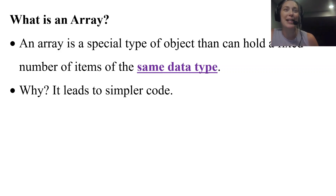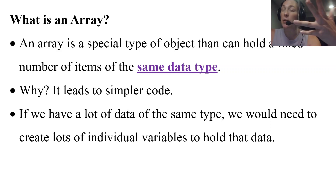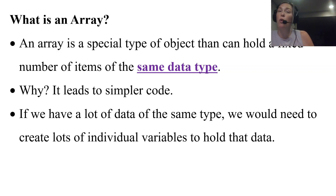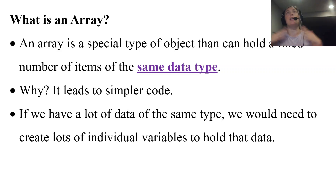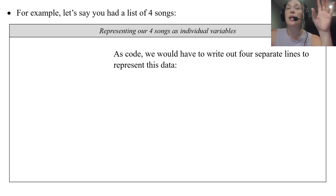Why do we want this data structure called an array? It's going to lead to simpler code when we have a lot of data of the same type. So far in Java we've had to create variables, and if we have a lot of integers or strings we would have to make a variable for each — and that's just not going to be very practical.